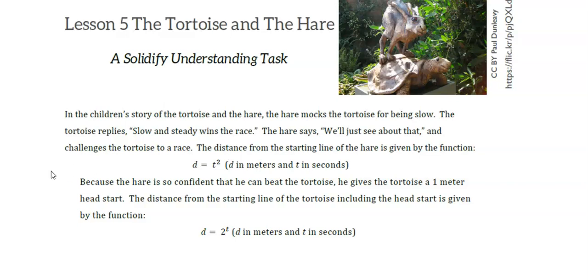Because the hare is so confident that he can beat the tortoise, he gives the tortoise a 1 meter head start. The distance from the starting line of the tortoise, including the head start, is given by the function d equals 2 to the t power, where d is in meters and t is in seconds. We're going to compare the distance that the hare is running over time to the distance that the tortoise is running over time. The hare's distance is modeled with a quadratic function, and the tortoise's distance is modeled with an exponential function.